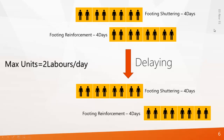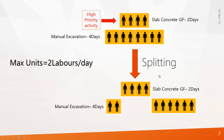Let's look at this example. There are two activities: footing shuttering for four days and footing reinforcement again for four days, where two labor forces are working. When it reaches day three and four, you require two more laborers to finish the task on time. But if your company has only two laborers and your resource manager is not ready to give you more, in such cases you can go for an option called delaying — you delay the footing reinforcement activity by two days so you can manage your resources. This technique is called delaying.